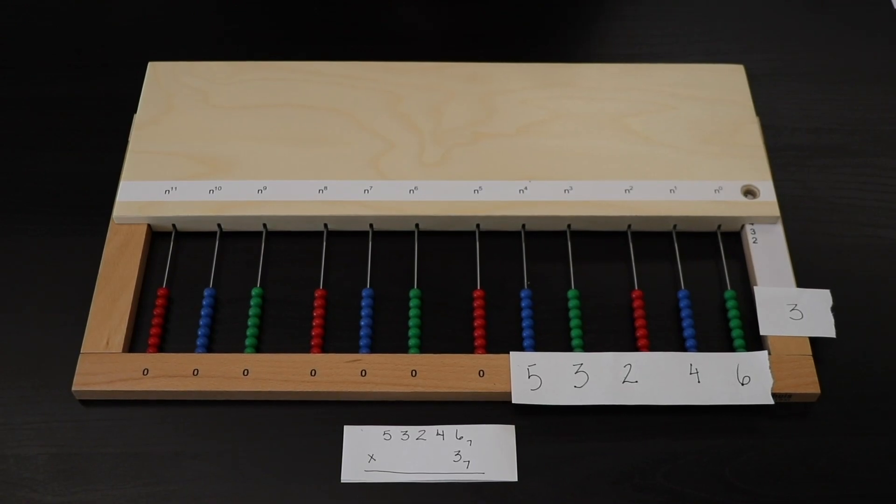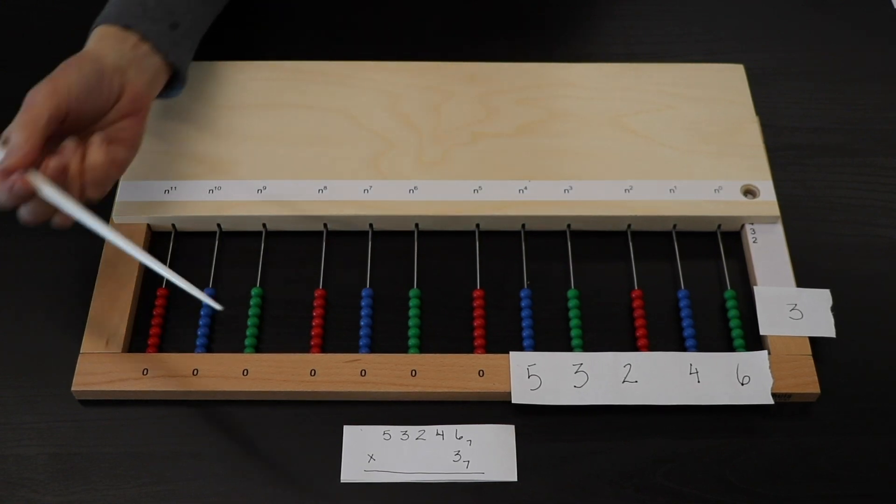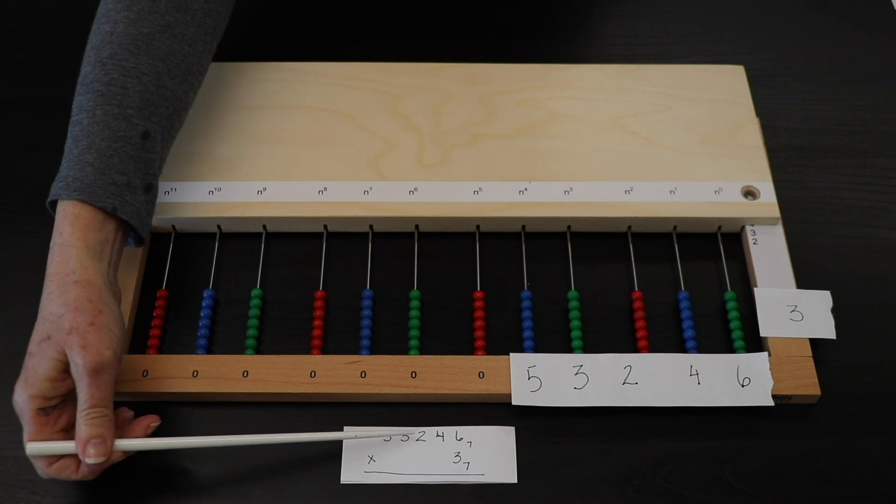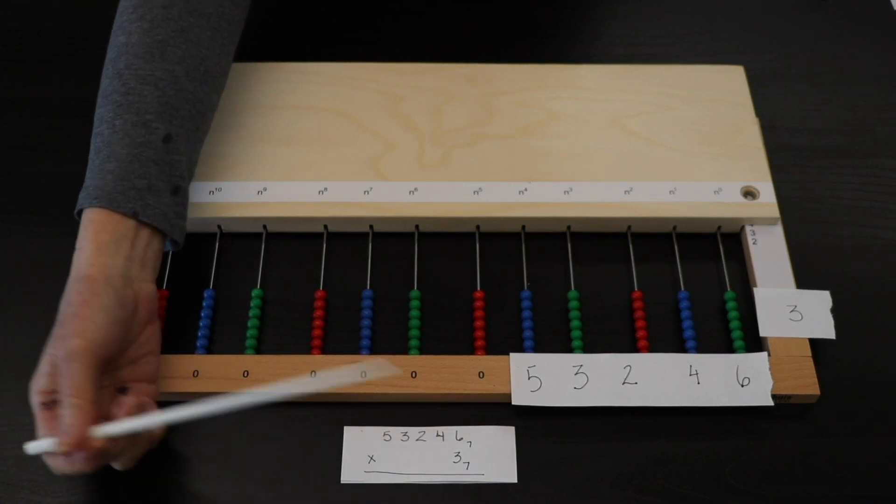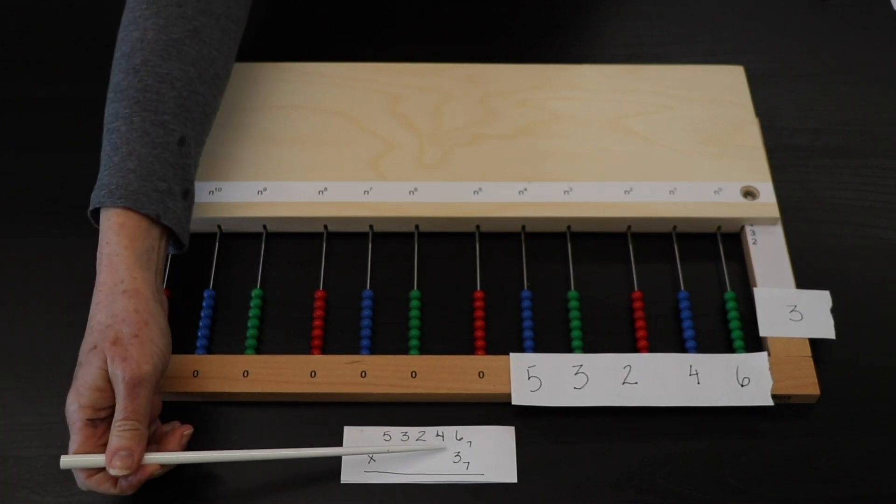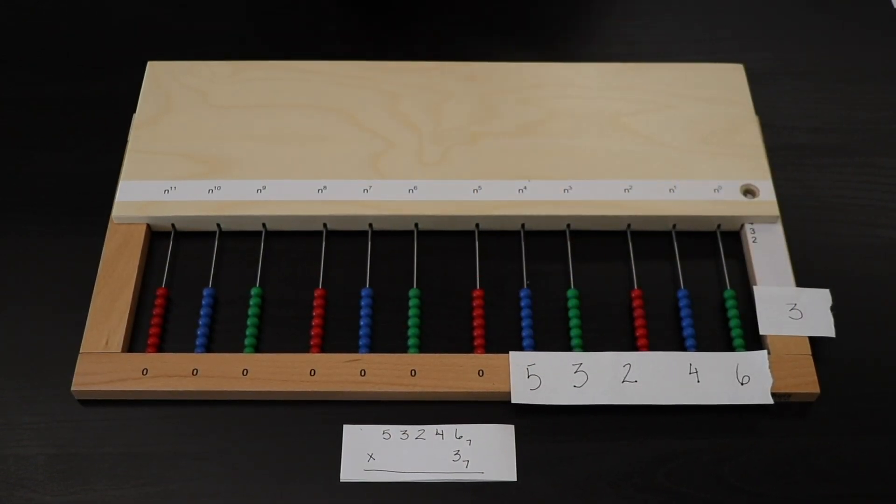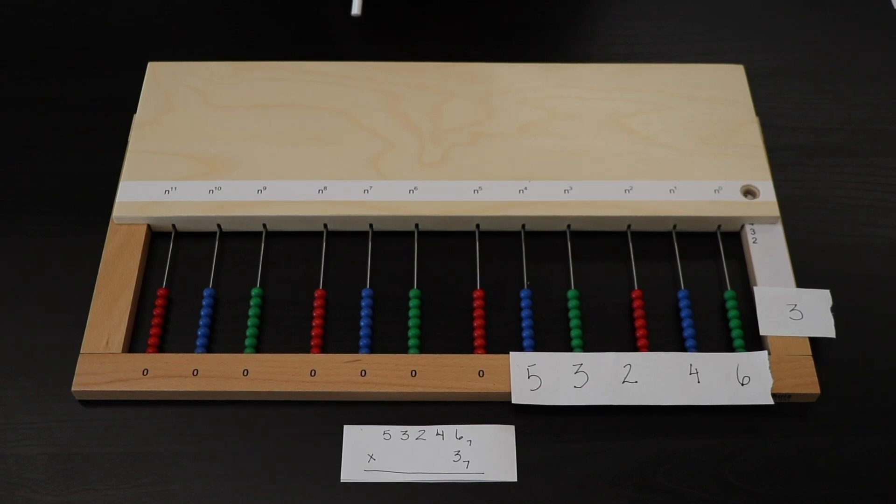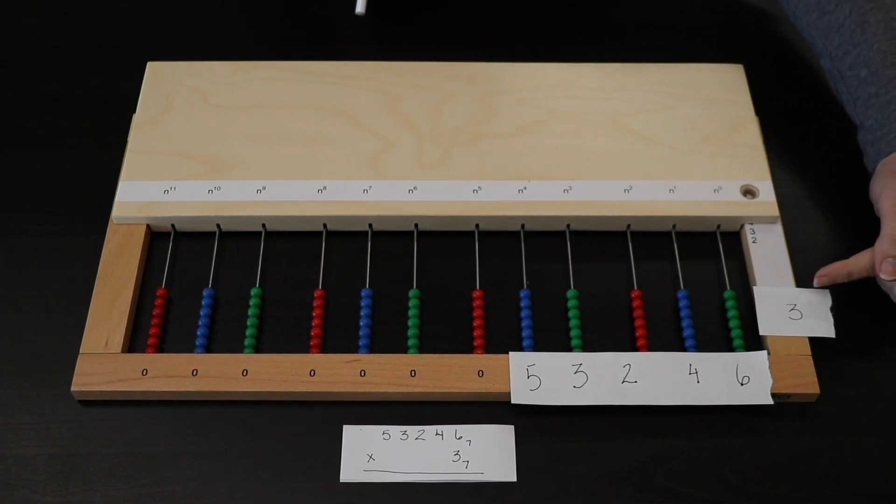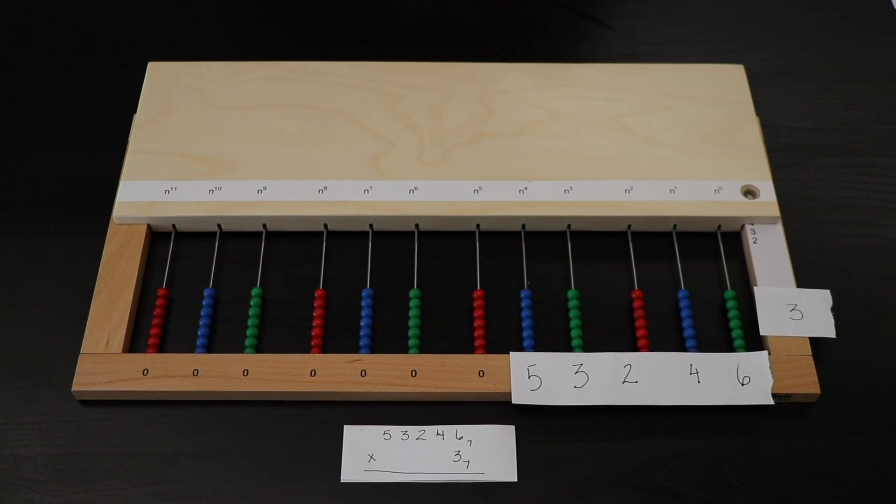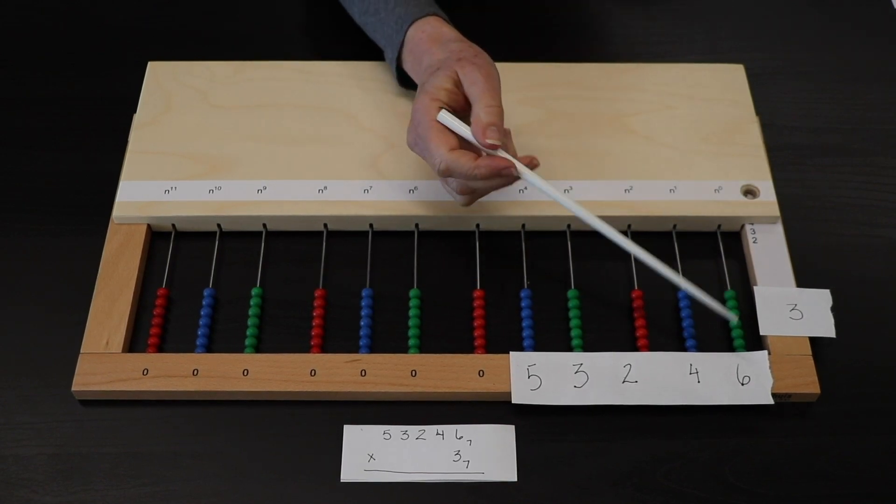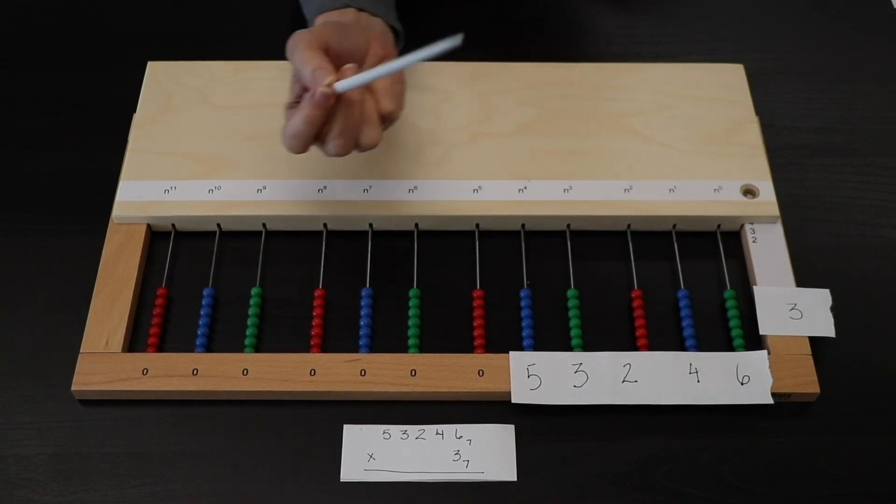So the purpose of the multi-base bead frame is to not only add and subtract, but to be able to multiply. So if I want to multiply 5, 3, 2, 4, 6, base 7, times 3, base 7, I set up my multiplicand, just like I did on my flat bead frame, and I have my multiplier up here.